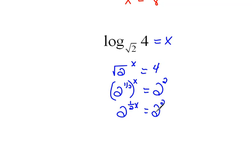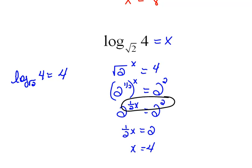And now that the bases are the same, the exponents must equal each other. So that says 1/2 x has to equal 2. Now to solve that, we would have to multiply both sides by 2 to get rid of the 1/2. So x would equal 4. So that says the log base square root of 2 of 4 equals 4.